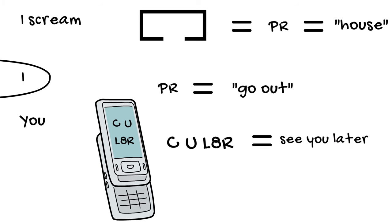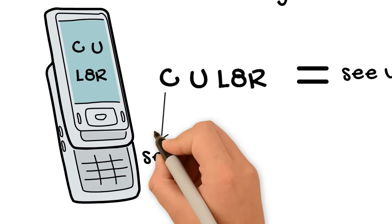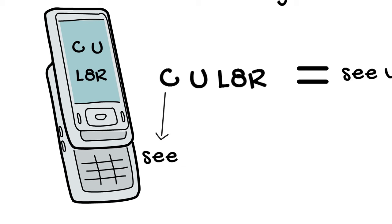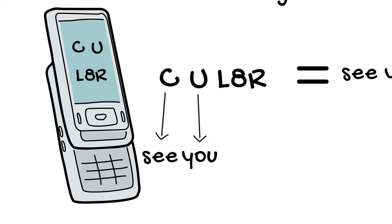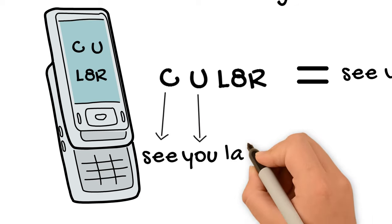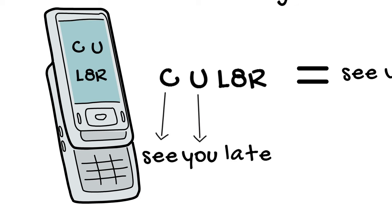We're using the C and the U for their names, the sound of their names, right? Not their usual letter sounds. We're not using the C as a K or a S. We're using it for its name, C, which sounds just like the English word see that's spelled S-E-E. And then U, same thing. We're not using it as OOO or anything like that. We're using it for the sound of its name, U, as in Y-O-U. The L on the other hand is actually being used as a normal letter, a LA sound. But the number eight is also being used here for the sound of its name. And then the R also for an R sound. So from that we get see you later, right?